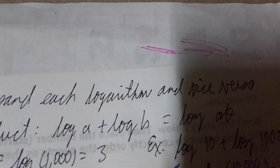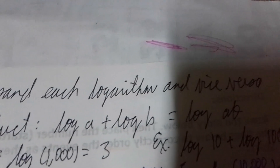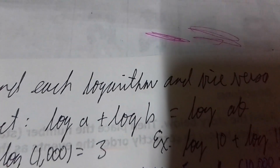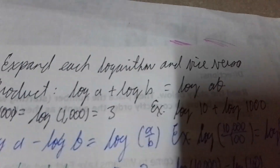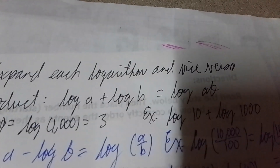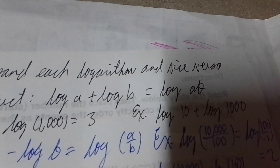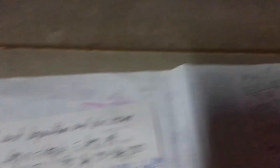We have the product law. For example, we have log of A plus log of B. If you were to write it as one log — it's already expanded when you see a plus or minus — but if you're going to simplify that, it would be log of A times B. Multiplication because of addition.